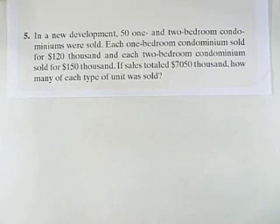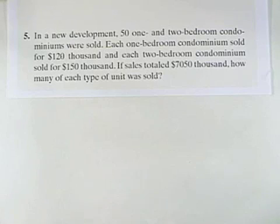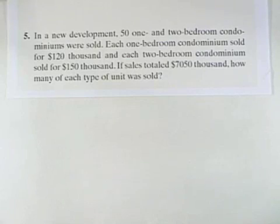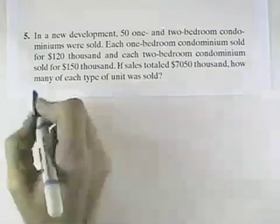In a new development, 1- and 2-bedroom condominiums were sold. Each 1-bedroom condo sold for $120,000, and each 2-bedroom condo sold for $150,000. As sales totaled $7,050,000, how many of each type of unit was sold?